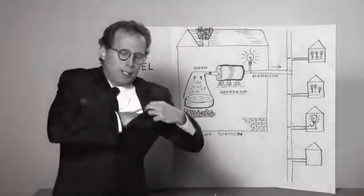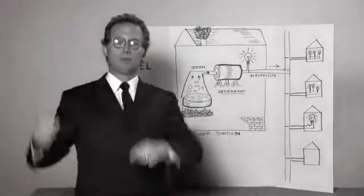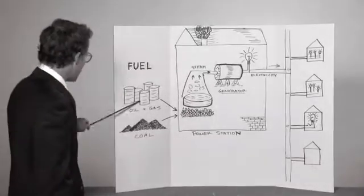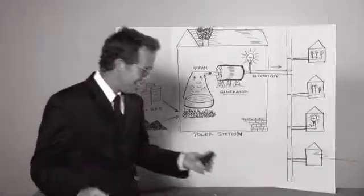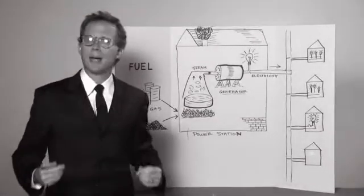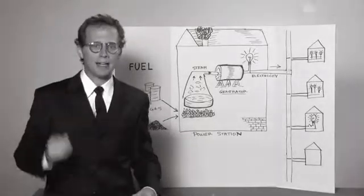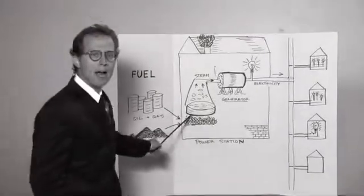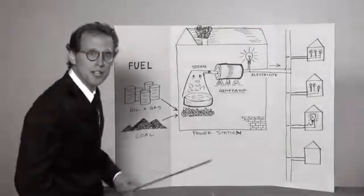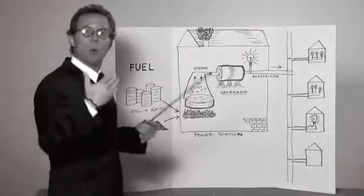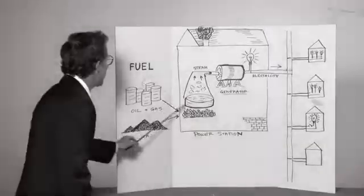We create electricity by burning such fuels as oil and gas and coal. This is coal. These materials are plentiful and they are cheap and abundant and very easy to mine right here in America. As you can see from this diagram, when we burn these fuels, the energy created heats the water that is then turned into hot steam.